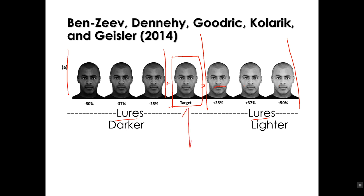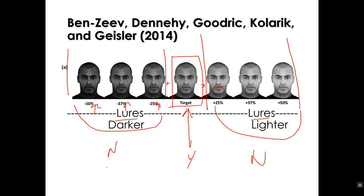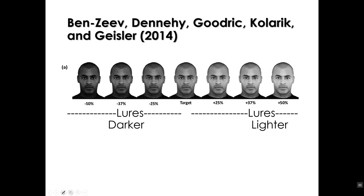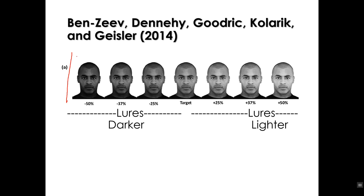Of course, when they see the target face, they should answer yes. But for all these lure faces, the answer should be no — this is not the same face. They presented each one of these to each subject four times, randomly cycling through. What the researchers ended up being interested in is the most extreme lures — that is, the lightest lure and the darkest lure — and this is what they used for the statistical analysis.